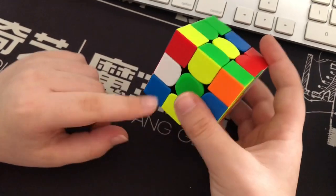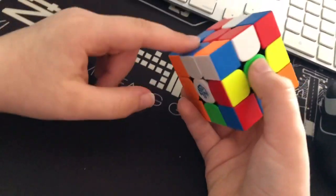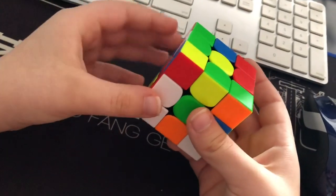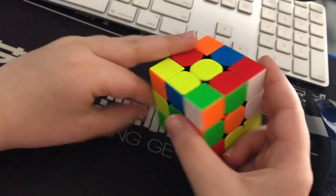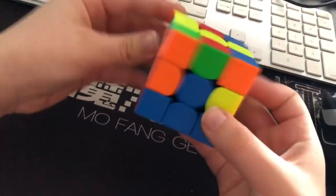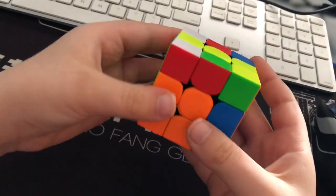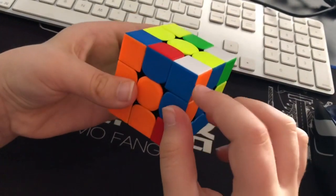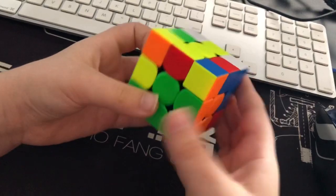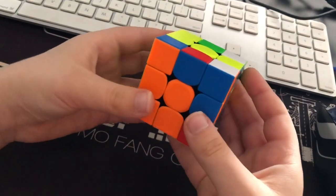I had white at the bottom and green in my front. I put this blue piece to the back using D prime, moved this cross piece down like that, and moved this piece there. Then I did this pair like this, then I moved this and did that pair like this.